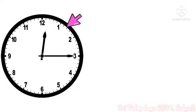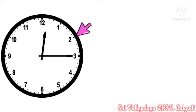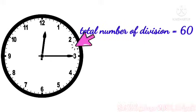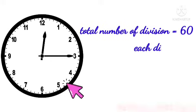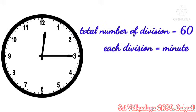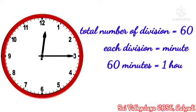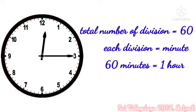There are 5 equal divisions between two numbers. The total number of divisions are 60. Each division represents a minute. One full circle of a clock has 60 minutes.